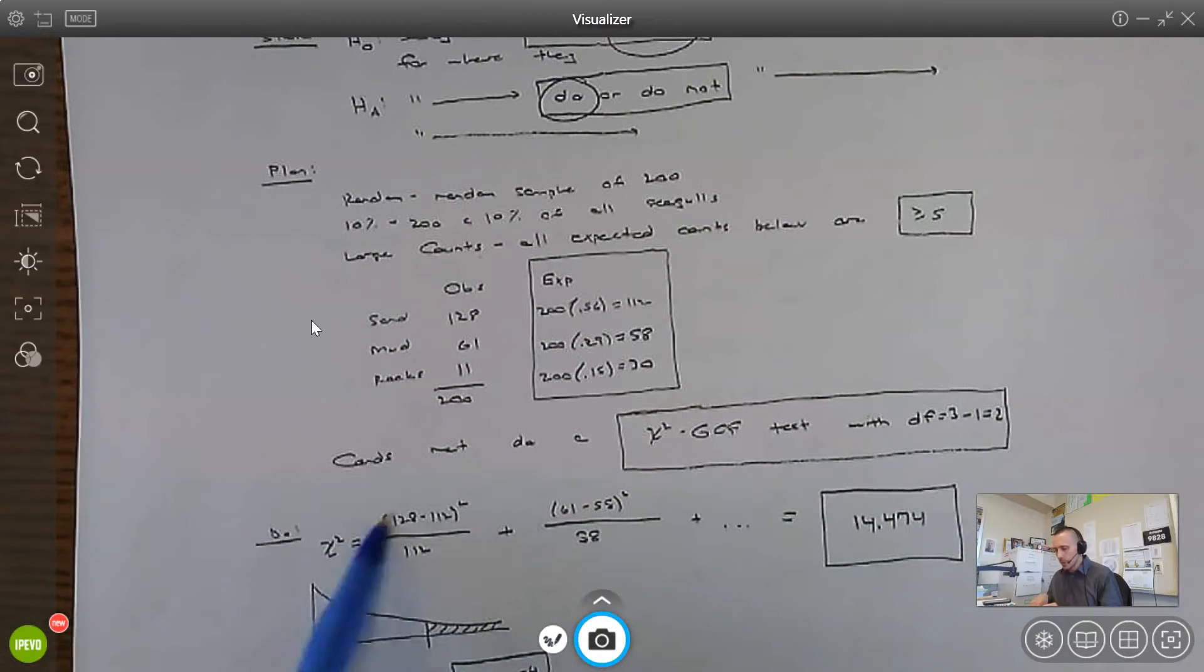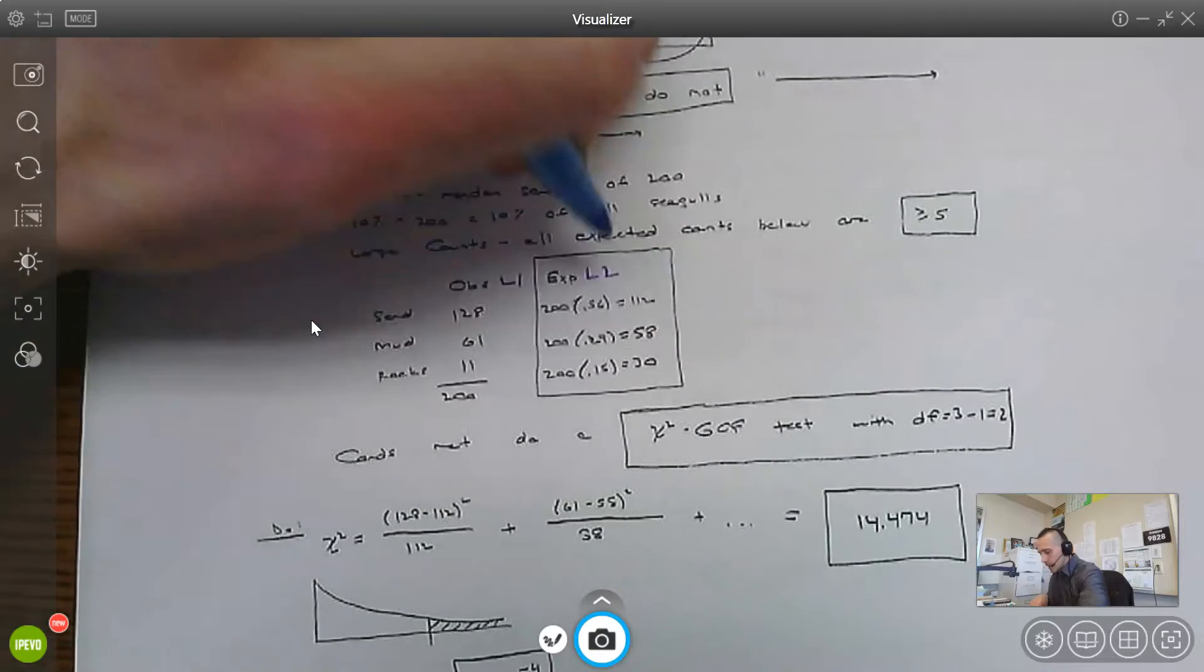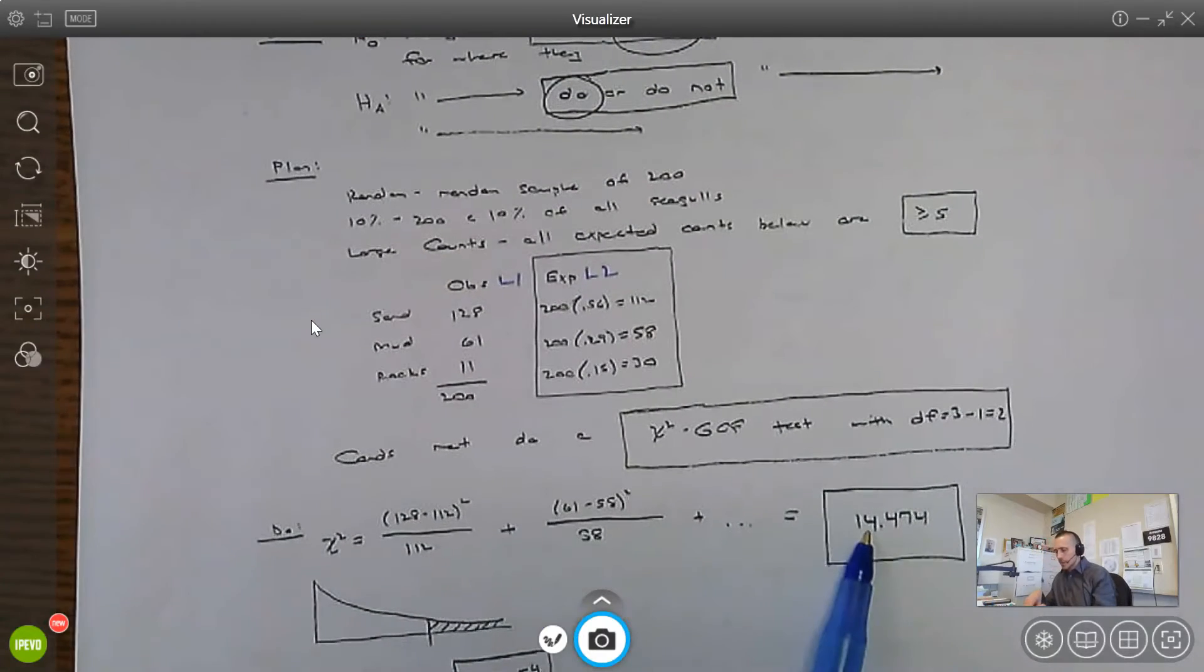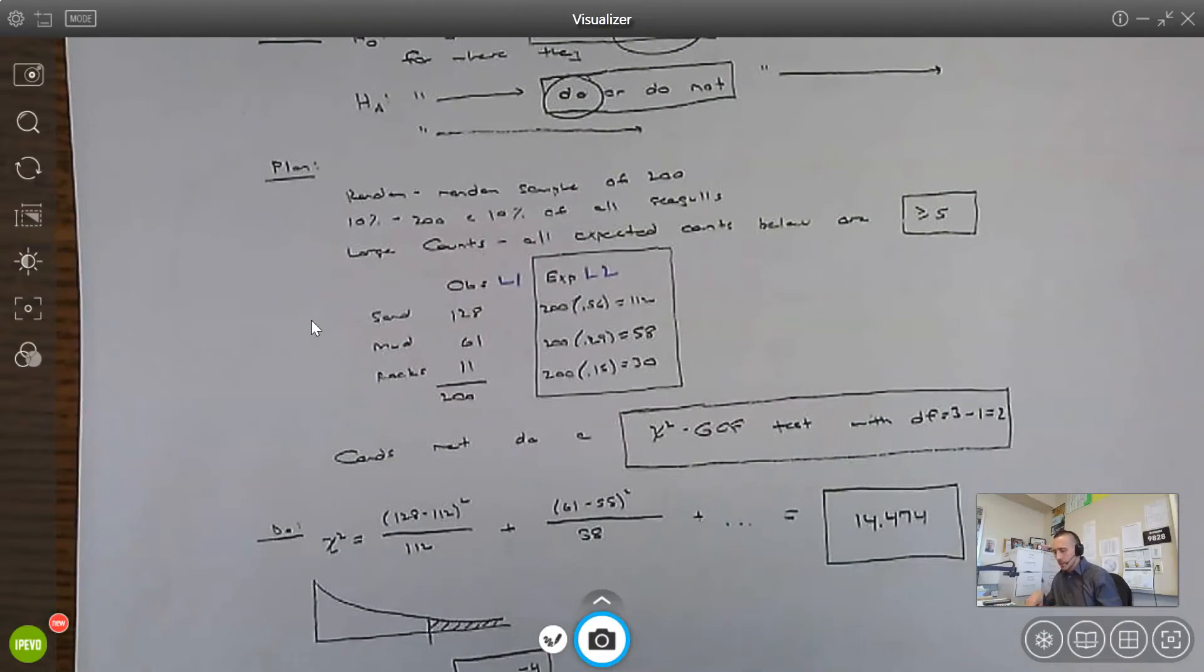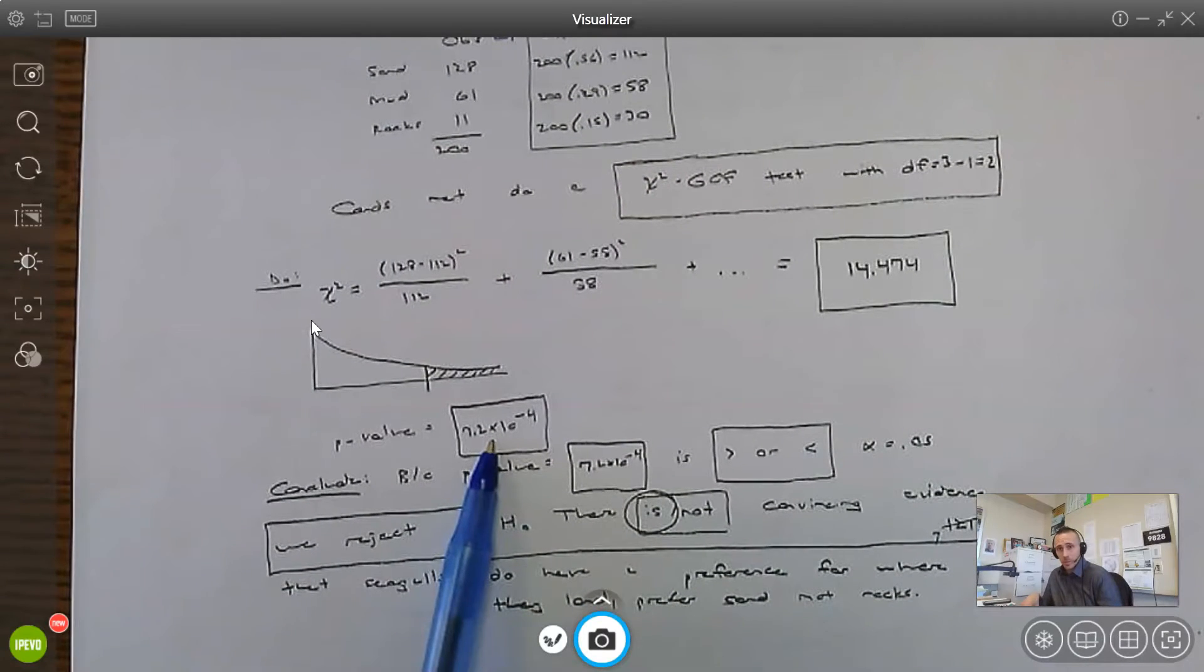I'm going to show the observed minus expected squared a few times, summed up. And then I'm just going to plug the observed in list one, the expected in list two in my calculator. And then I'm going to do that chi-squared goodness fit test. It's going to spit out my test statistic, my p-value. Notice it's in scientific notation. The p-value has to be between zero and one.